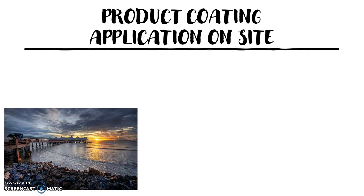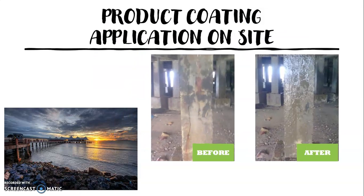This is the product coating application on site. The structure shown is a quay located in a seawater environment, where concrete structures are extremely exposed to corrosive agents such as chloride ions, oxygen, water, and moisture. On the left side you can see the problem area before coating, and on the right side is the structure after applying our Hybrid Geopolymer Coating — it looks like a new structure.